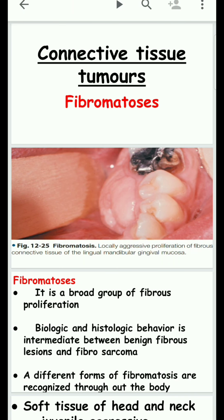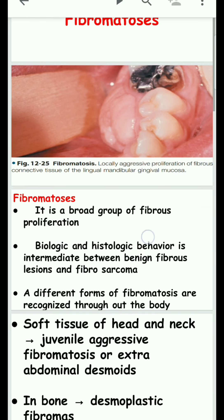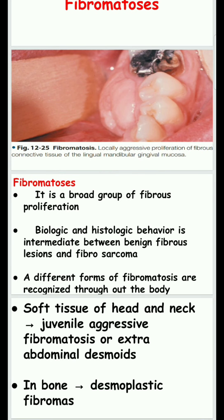Today we discuss the topic of Fibromatosis in Connective Tissue Tumors. It is a broad group of fibrous proliferations. The biologic and histologic behavior is intermediate between benign fibrous and malignant neoplasm. Benign is a type of tumor that occurs on the skin where proliferation is extended, but in malignant tumors they accumulate in an area and get transported to other tissue structures.